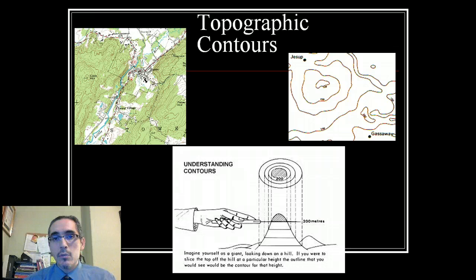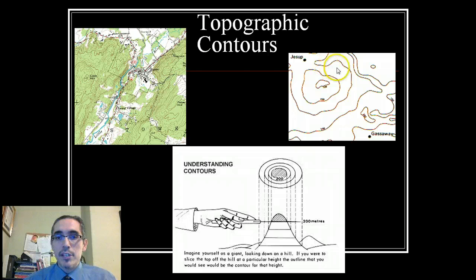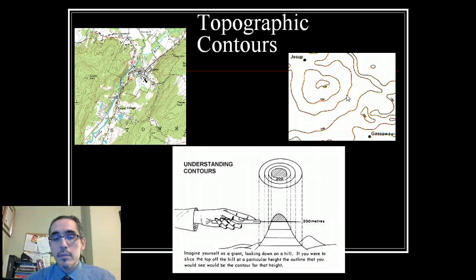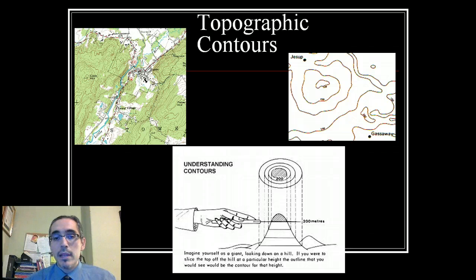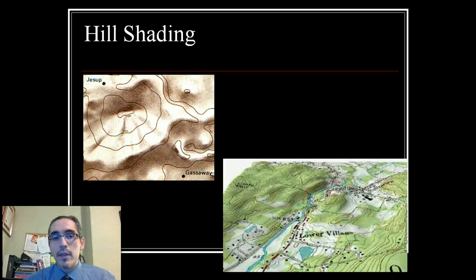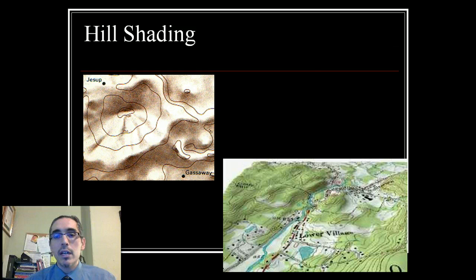It takes a little bit of training to read those, but essentially they work by connecting points of equal elevation. When you look at them from directly above, they look like a lot of squiggly lines, but if you understand how they work, they can actually be interpreted to the point where you can see the shape of the land. A lot of modern maps will supplement topographic maps by applying hill shading so that you get a pseudo three-dimensional look to emphasize what's going on inside the map.